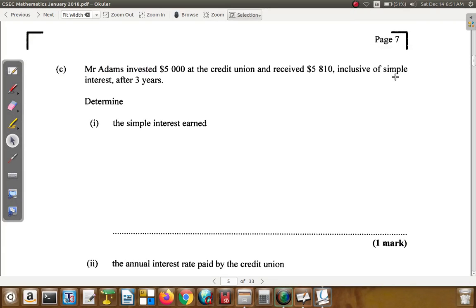Let's look at question 1c of the January 2018 CSEC Maths Pass paper. Mr. Adams invested $5,000 at the credit union and received $5,810 inclusive of simple interest after three years. Determine the simple interest earned.